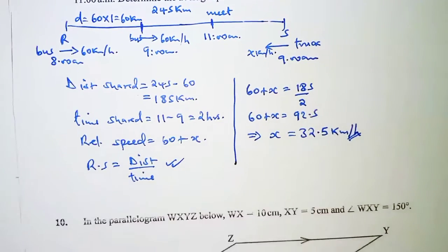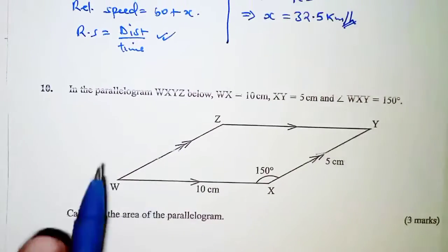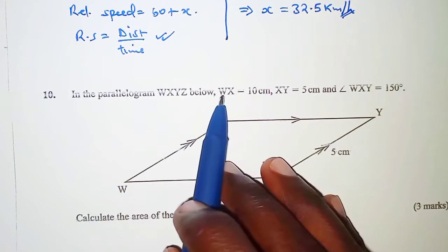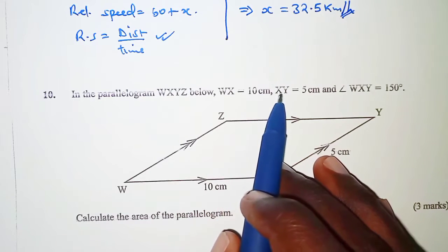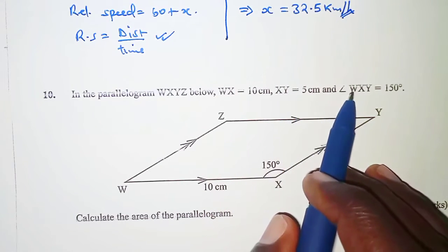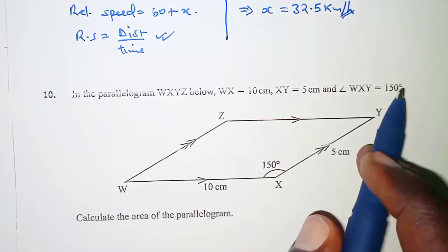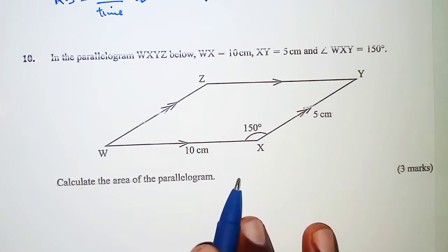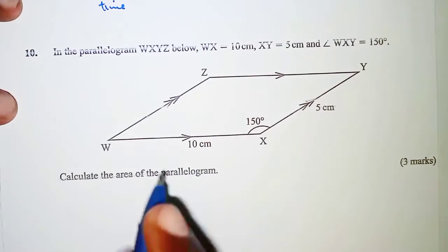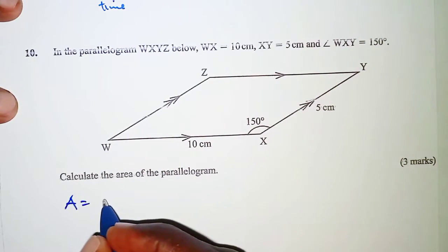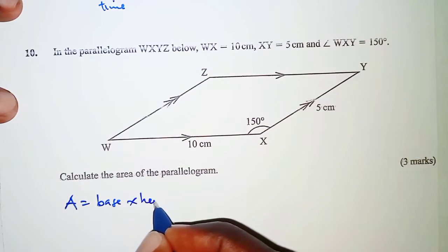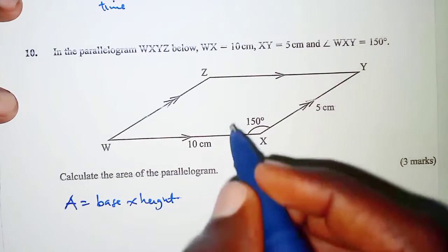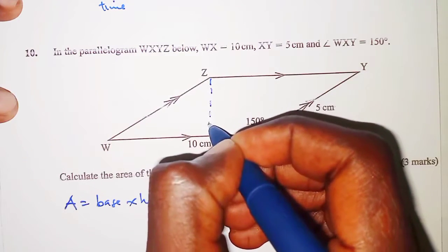Next, for question number 10: in the parallelogram WXYZ, WX is 10 centimeters, XY is 5 centimeters, and angle WXY is 150 degrees. We have the diagram as shown. We are required to calculate the area of the parallelogram. The area is calculated as base times height. We know the base is 10 centimeters but we need to determine the height.